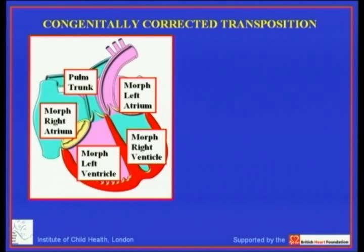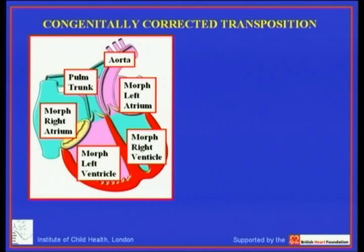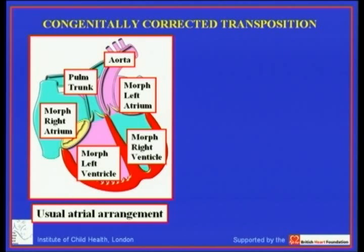The blood comes back to the usually positioned left atrium but now enters a morphologically right ventricle. It is the morphologically right ventricle — now usually left-sided — that pumps the systemic circulation. One of the key problems in these patients is that the morphologically right ventricle is not designed to support the systemic circulation.